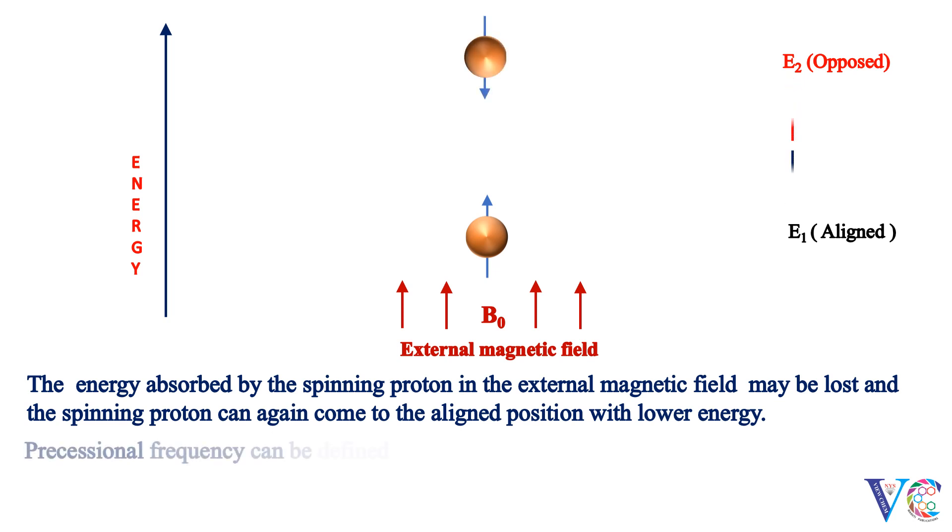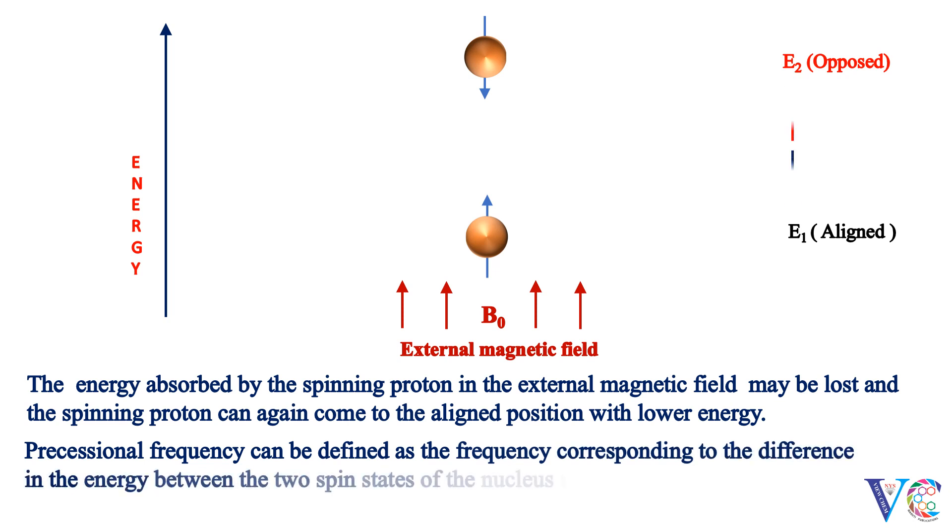Precessional frequency can be defined as the frequency corresponding to the difference in the energy between the two spin states of the nucleus, that is E2 and E1. Precessional frequency is also called as Larmor frequency.